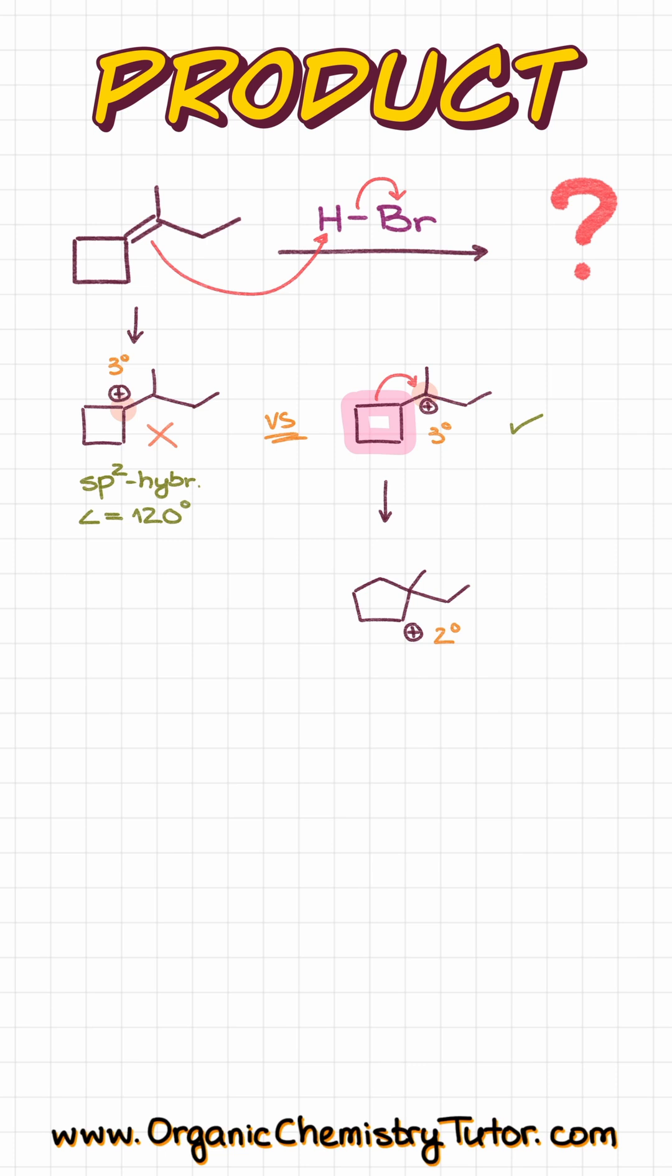This is actually going to be somewhat more stable because we have expanded our ring and we no longer have a ring strain, which can then undergo another carbocation rearrangement, giving us a tertiary carbocation, which again is more stable than the predecessor secondary carbocation.